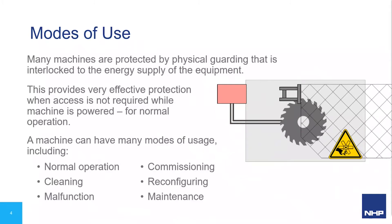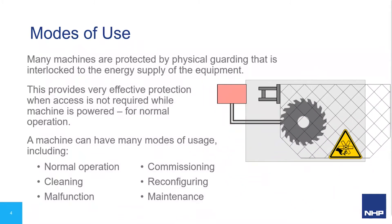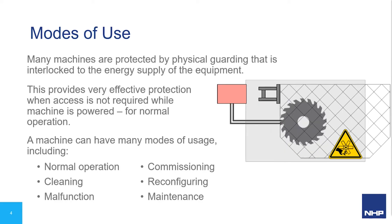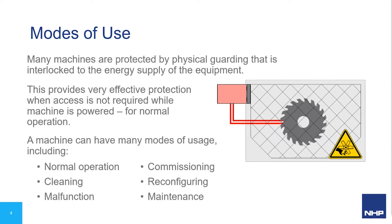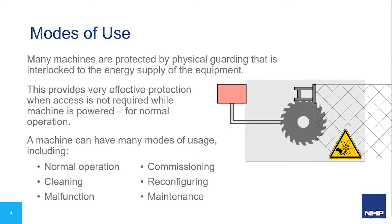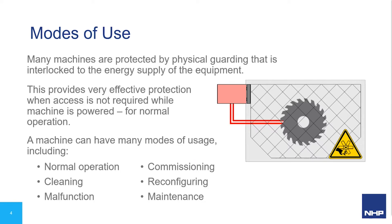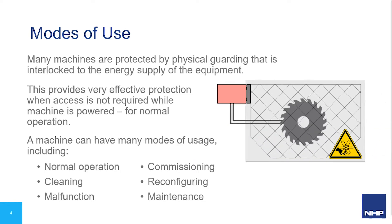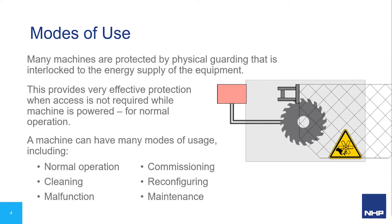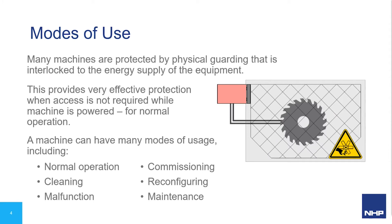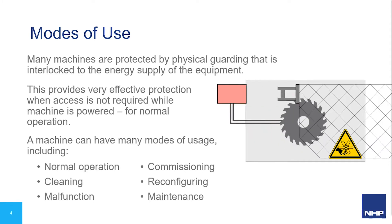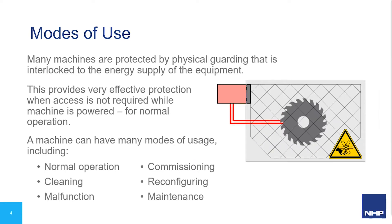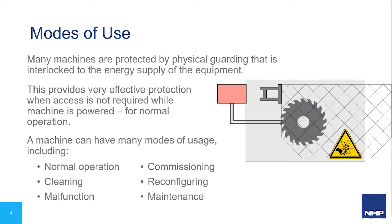It is typical to find many machines protected by physical guarding interlocked to the energy supply of the equipment. This is generally effective for normal operation. However, normal operation is only one of potentially many different modes that a machine can operate in, so we must ensure safeguard measures maintain safety in all modes. A common oversight is the failure to account for all modes of use — including normal operation, cleaning, malfunction, commissioning, reconfiguring, maintenance, and many more.